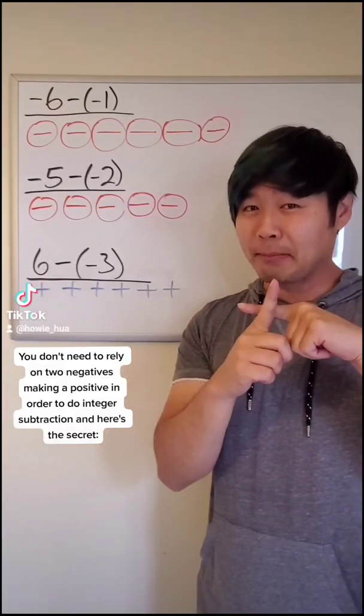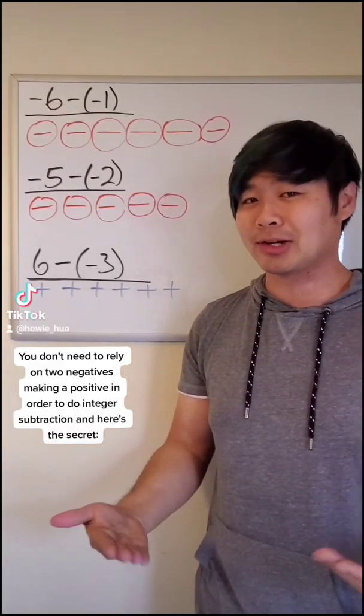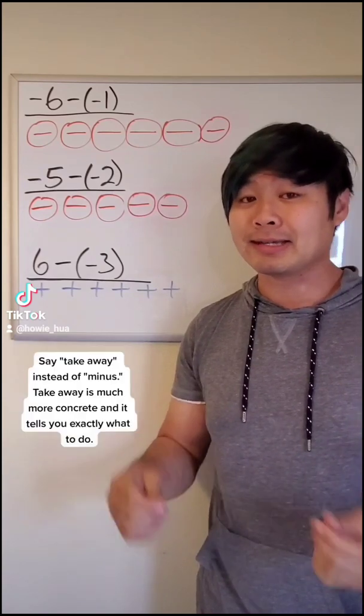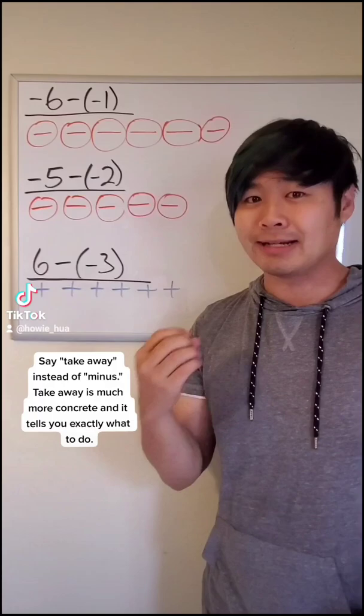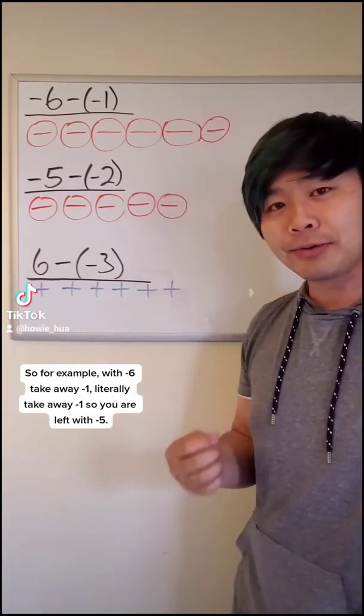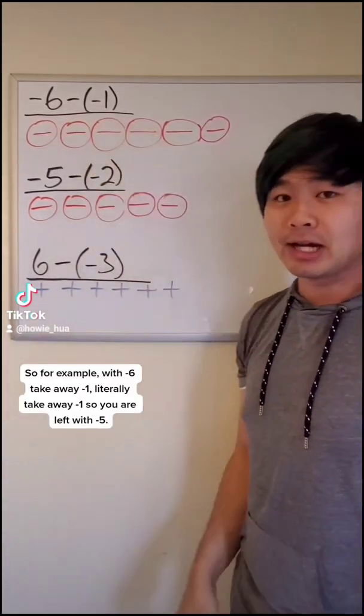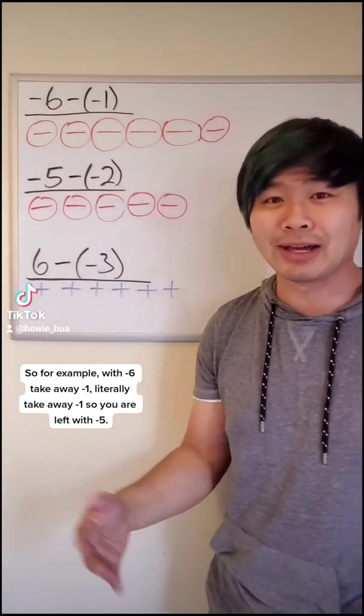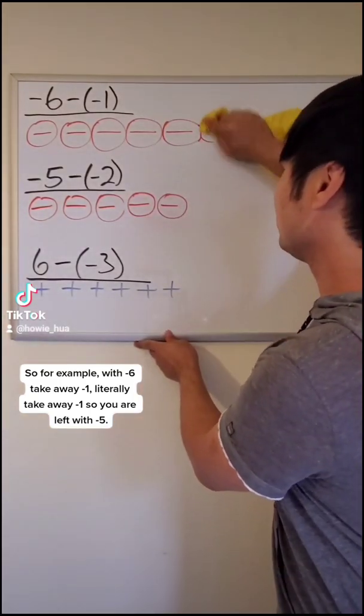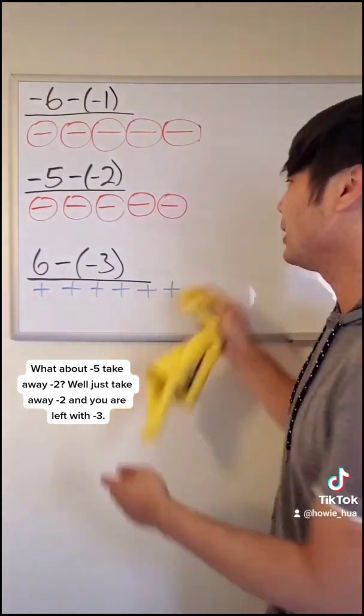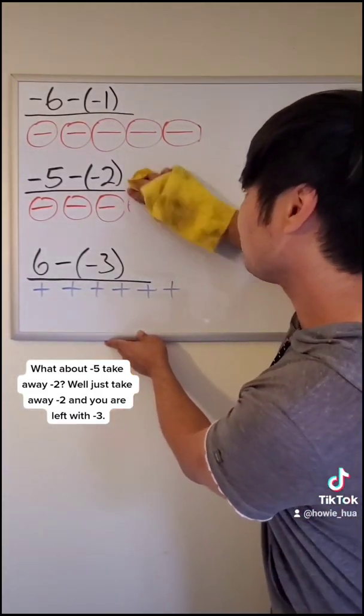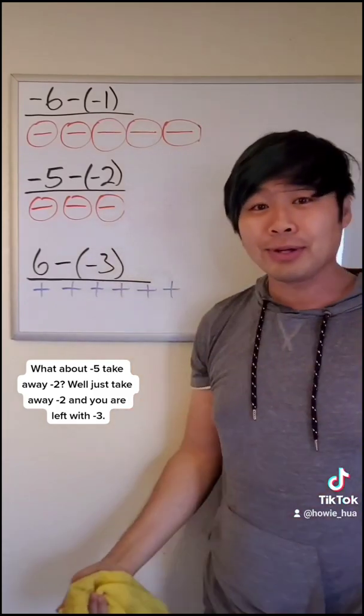You don't need to rely on two negatives making a positive in order to do integer subtraction. And here's the secret. Say take away instead of minus. Take away is much more concrete, and it tells you exactly what to do. So for example, with negative six take away negative one, literally take away negative one. So you're left with negative five. What about negative five take away negative two? Well, just take away negative two, and you're left with negative three.